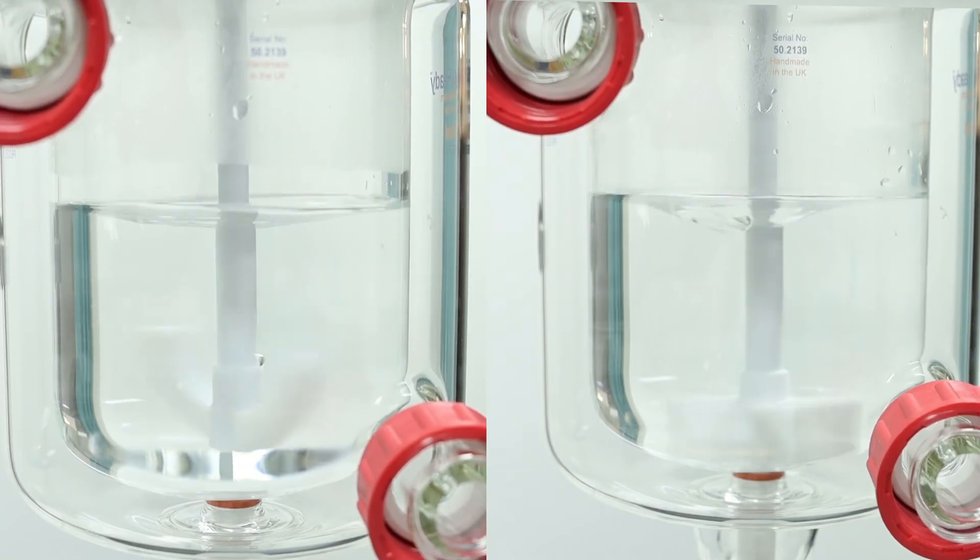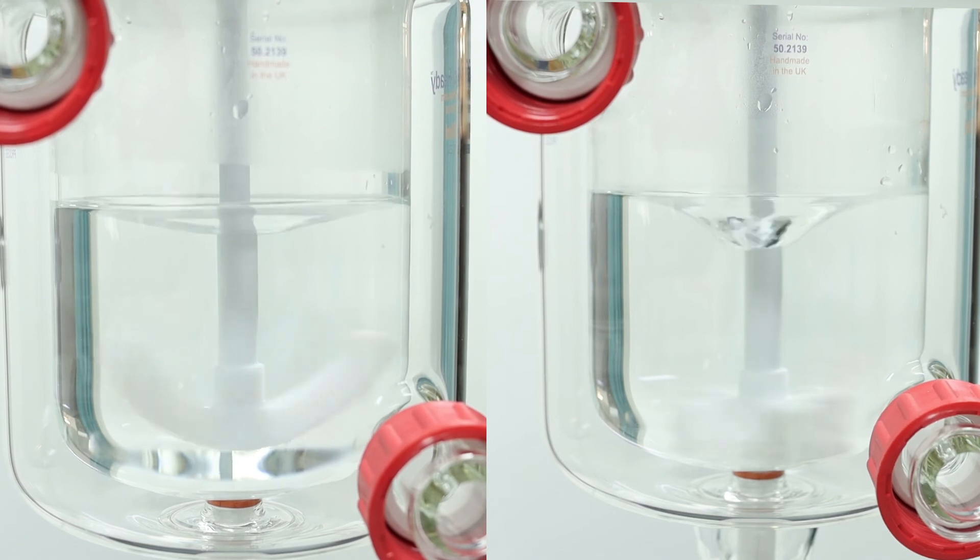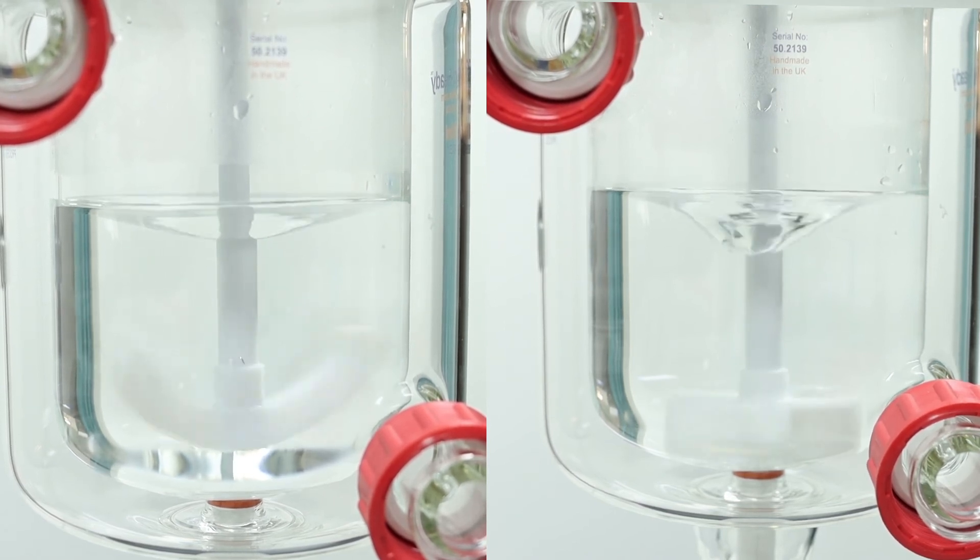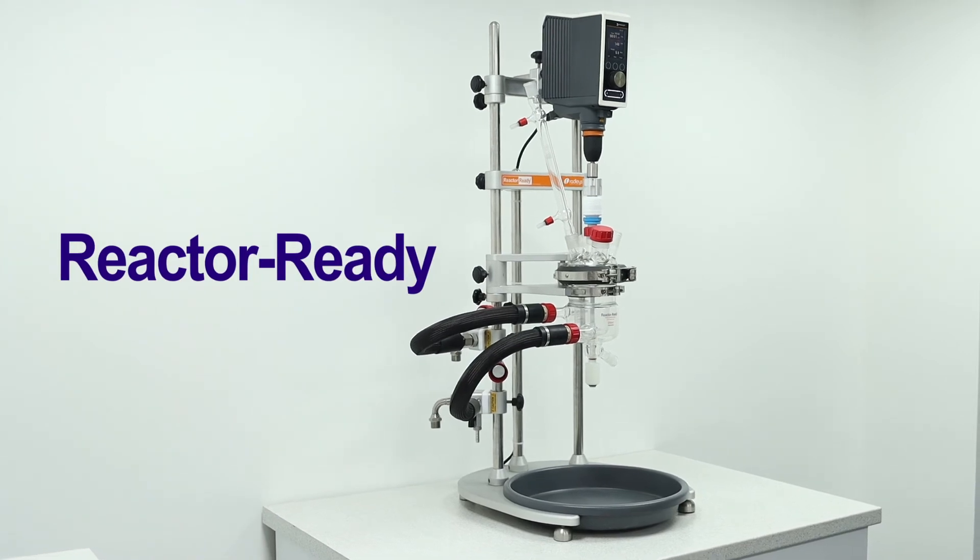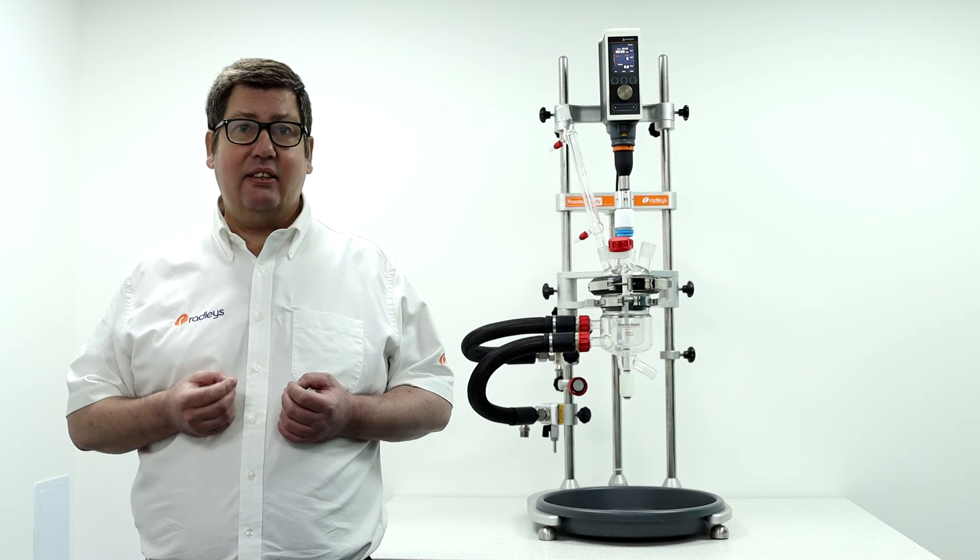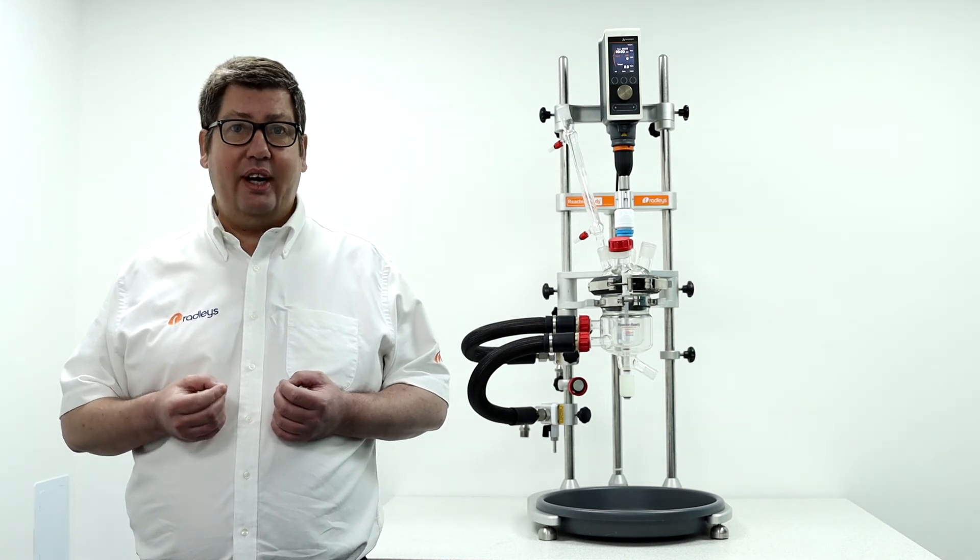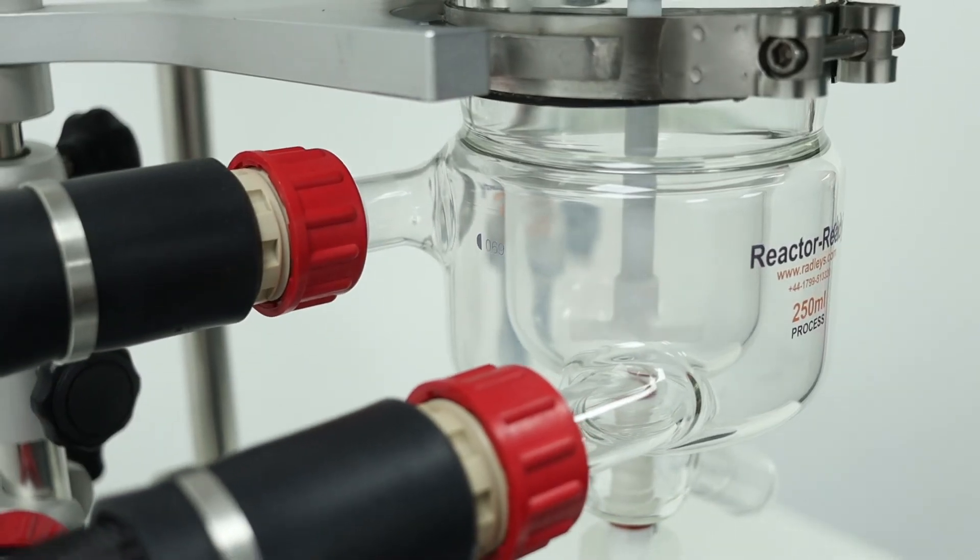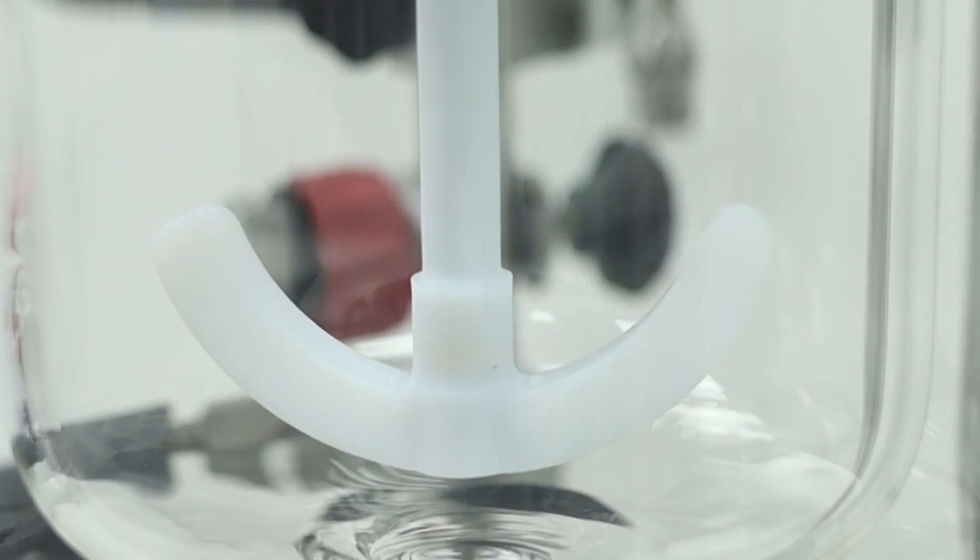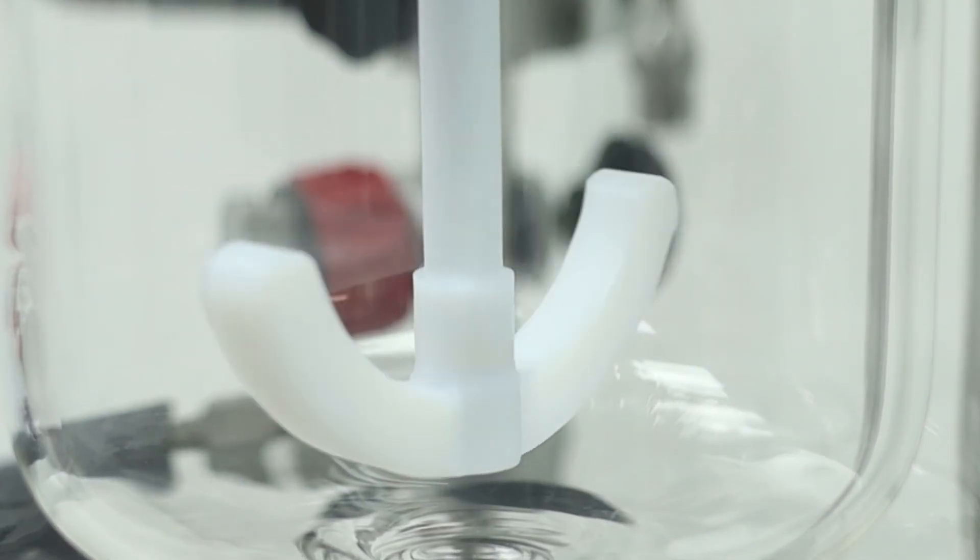The use of jacketed lab reactors enables the chemist to use overhead stirring with a choice of different impeller designs. For example with reactor ready jacketed lab reactors we're able to offer active heating and cooling on reaction volumes down to 500 ml, 250 ml, 100 ml and be able to replicate the geometry of industrial plant reactors with a range of stirrer impellers available.